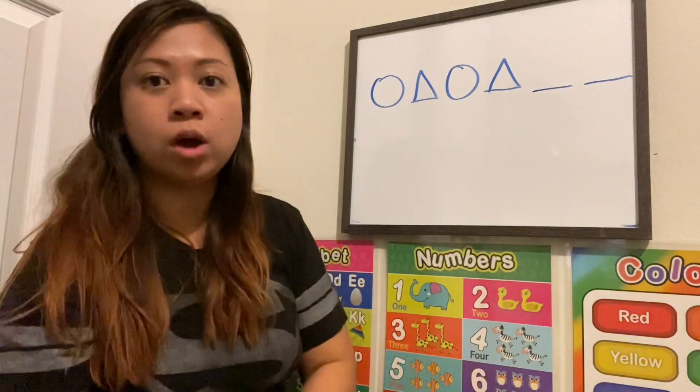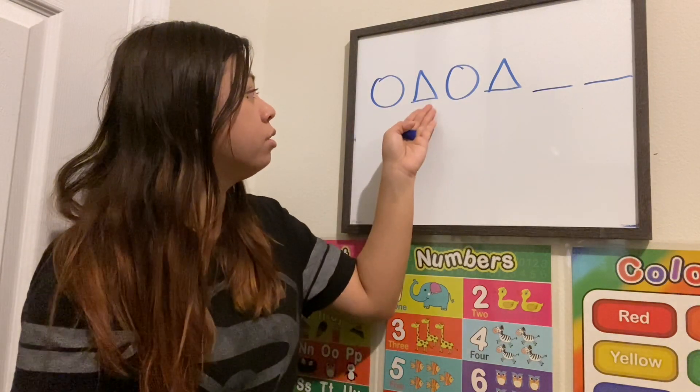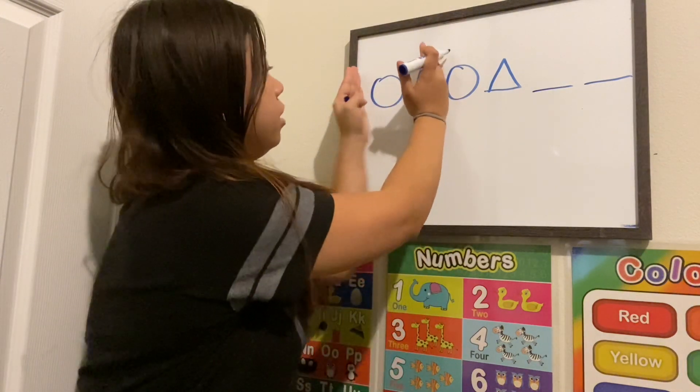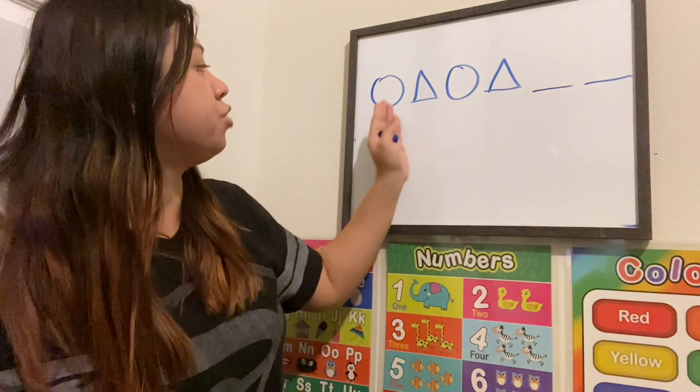Okay, you have a circle, triangle, and another circle, triangle. What do you guys think comes next? Circle, triangle.